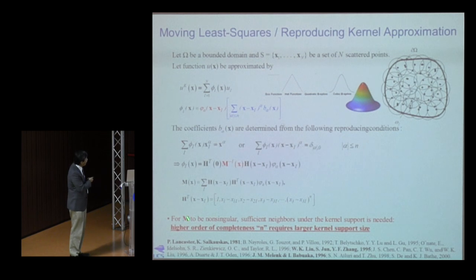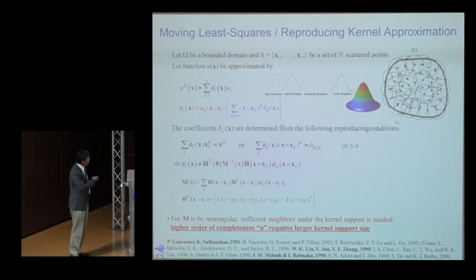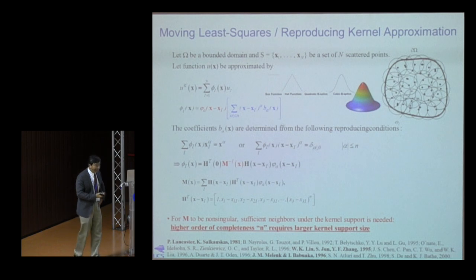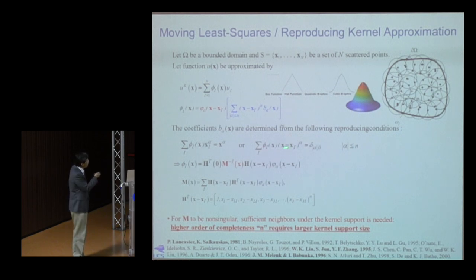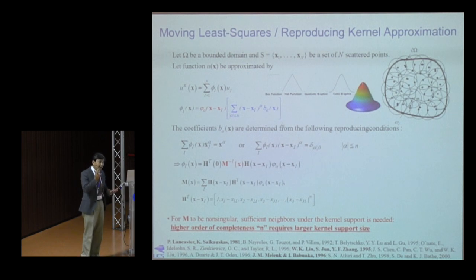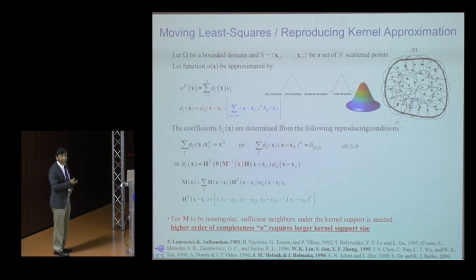Ensuring this moment matrix M is non-singular: it is the Gram matrix of the basis set with respect to the kernel. If the bases are linearly independent and the kernel is a positive function — which is the usual choice — then M is always non-singular, provided the compact support is large enough so the basis equations are linearly independent.